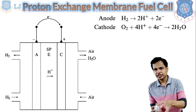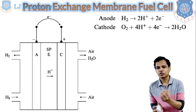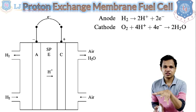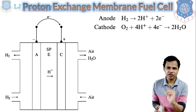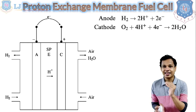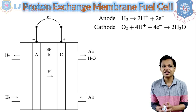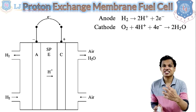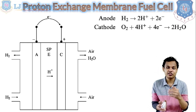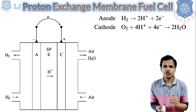The proton exchange membrane provides proper porosity to pass hydrogen ions through the electrolyte. This is the best fuel cell that can be used in vehicles right now, with ongoing research into other types. Its operating temperature range is around 50 to 100 degrees Celsius, making it a good option for vehicles.